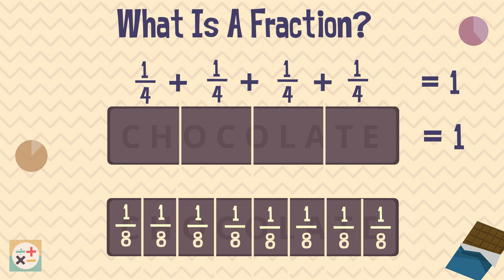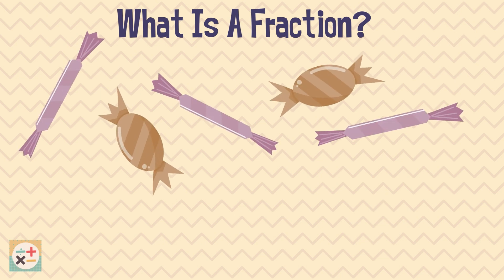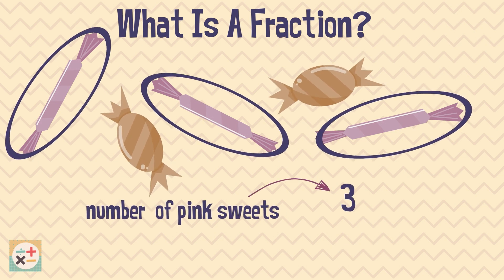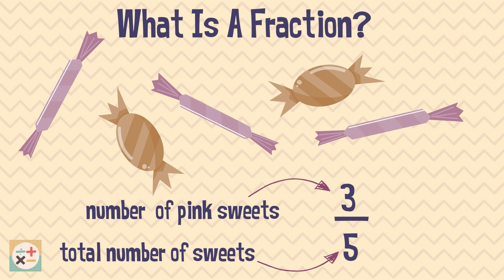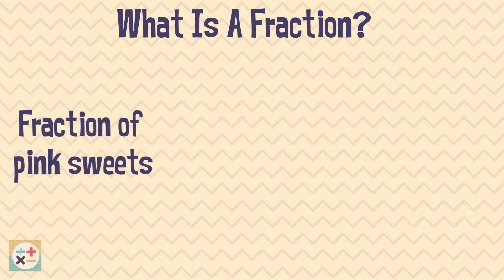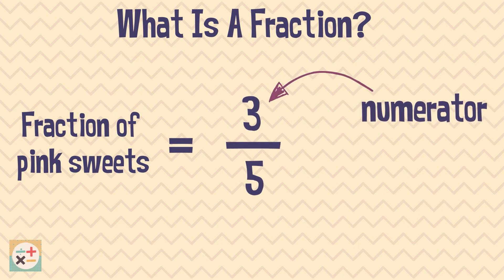So what is the correct way of writing out a fraction? Let's say you have five sweets in total. Three out of five sweets are pink, so we can write that as three over five. The number on top of the fraction is called the numerator and represents the number of parts or objects we are referring to.